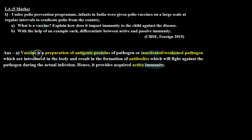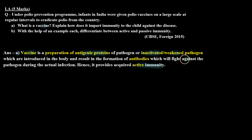So the formal answer for Part A: A vaccine is a preparation of antigenic proteins of a pathogen, or an inactivated or weakened pathogen, which are introduced into the body and result in the formation of antibodies. These antibodies will fight against the pathogen during an actual infection. Hence, vaccination provides acquired active immunity.